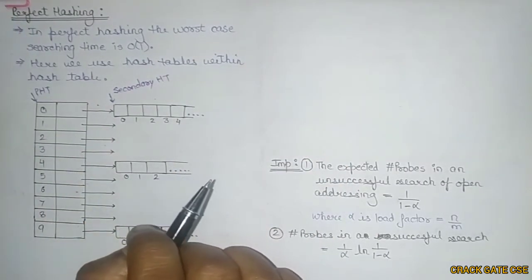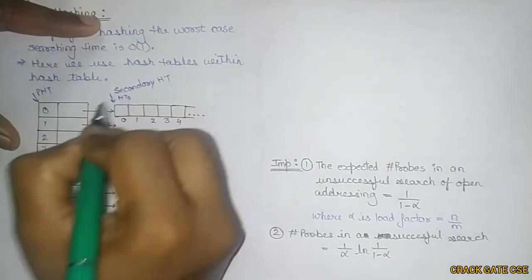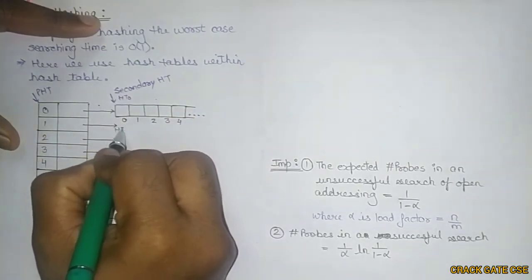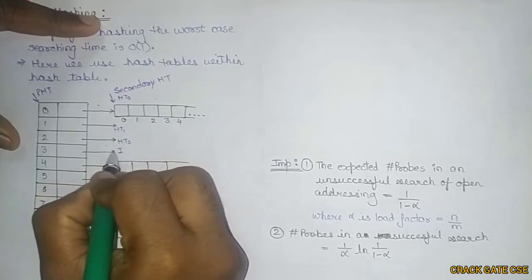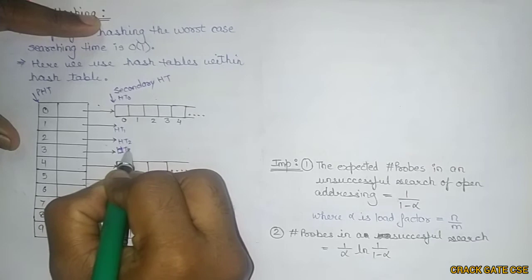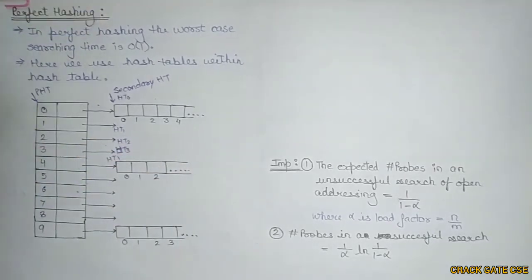These are the primary hash tables and these are the secondary hash tables. We can write it as ST0, similarly here will be hash table 1, hash table 2, hash table 3, hash table 4, and so on. There will be many different hash tables.